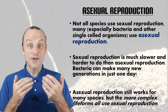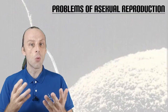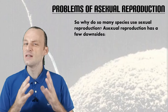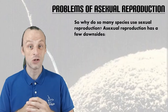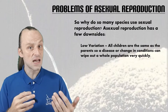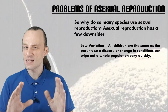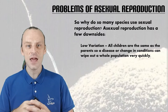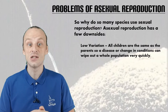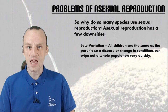But why? If sexual reproduction is so much slower and harder than asexual reproduction, why did so many species switch over to it? Well, asexual reproduction does have a few problems which we need to look at. The first of these is low variation. When you reproduce asexually, your children are almost always the same as you genetically unless there is a mutation. This means that there is very low variation in genetics, and a disease or a change in conditions can very quickly wipe out a whole population which reproduces asexually.